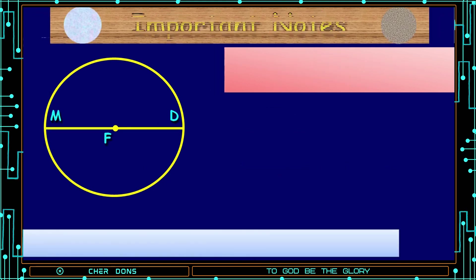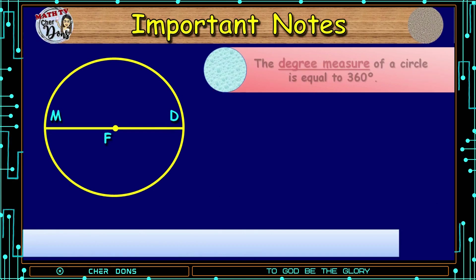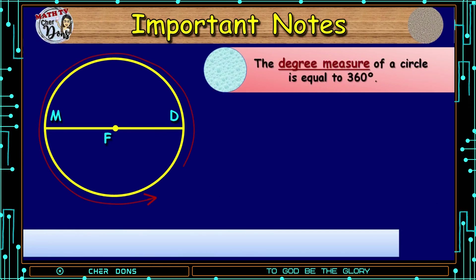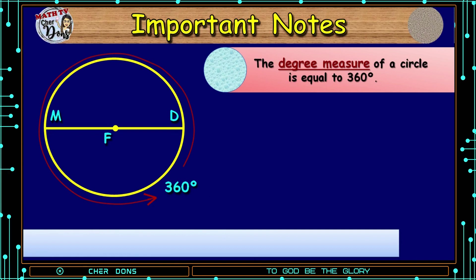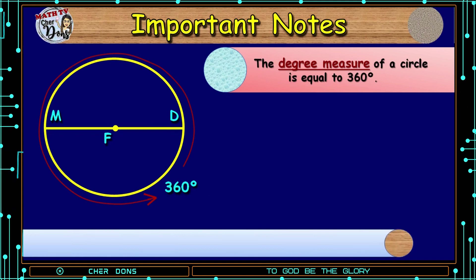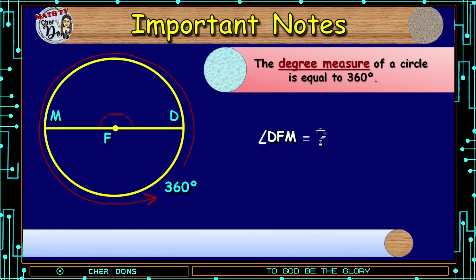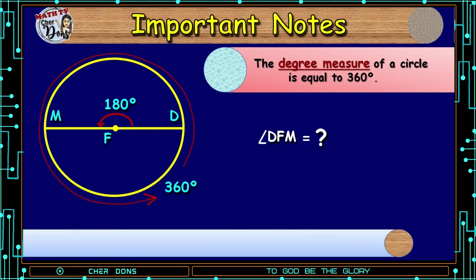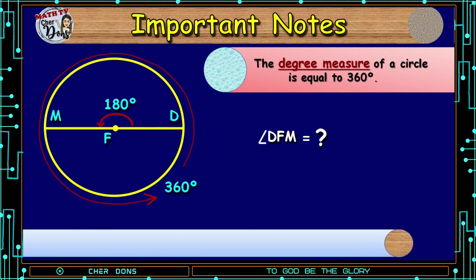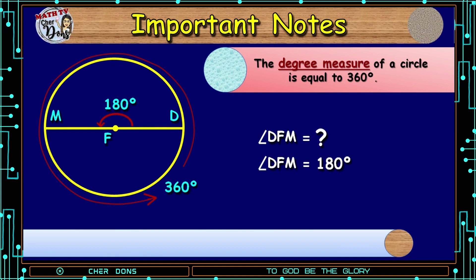Important note: the degree measure of a circle is equal to 360 degrees. Look at the given figure and give me the measure of Angle TFM. It's 180 degrees, because 360 degrees divided by 2 is equal to 180 degrees.